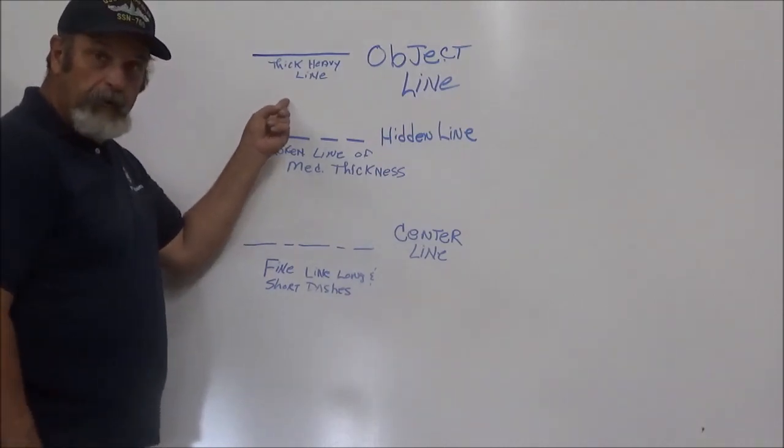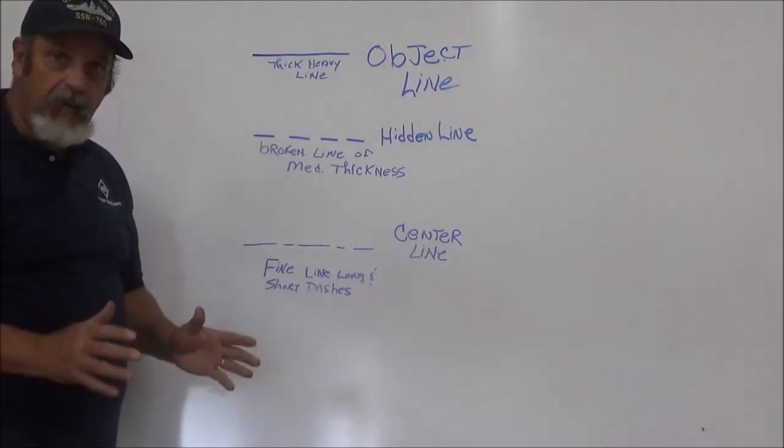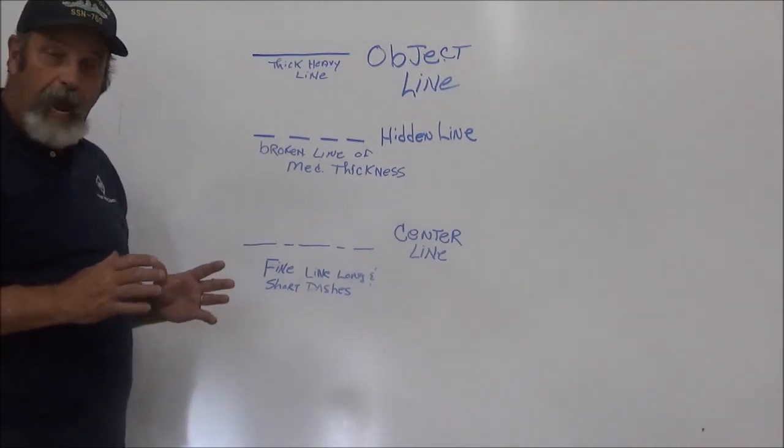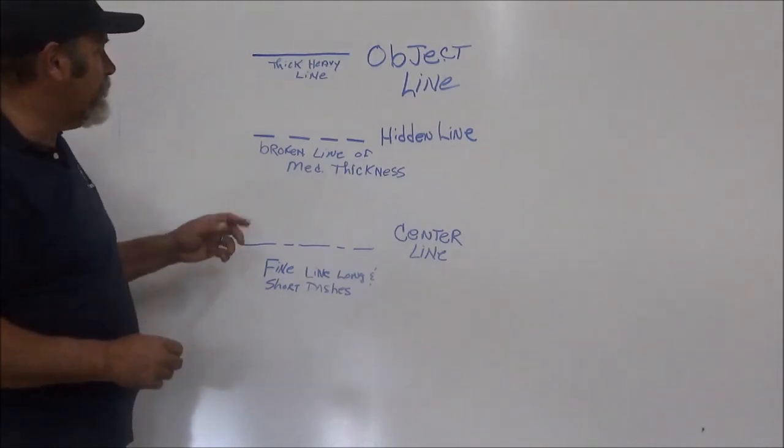Number one is going to be the object line. Now it's a thick, heavy line. It's going to be a real dark line and it's going to show the outside shape of an object or a hole or something like that.